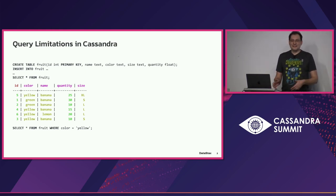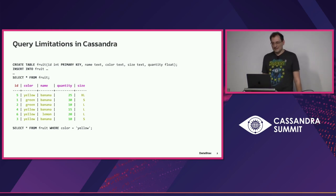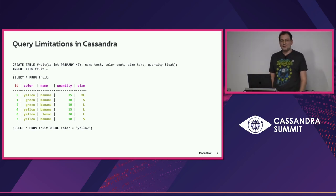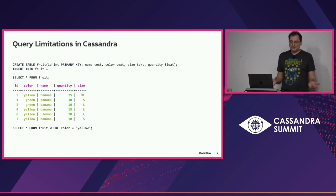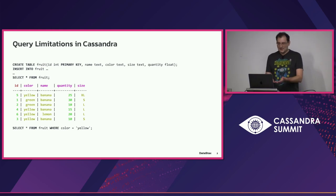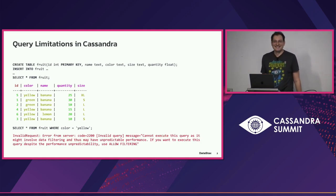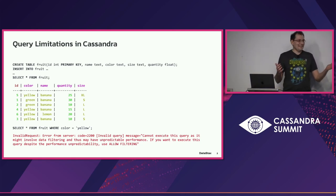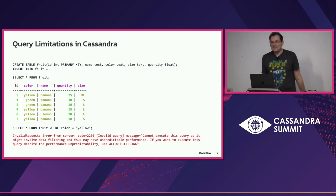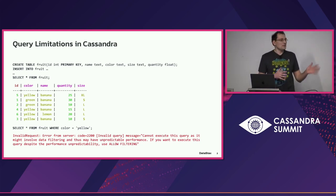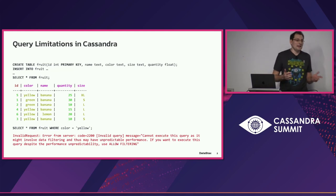Then we started doing some exercises and they quickly created something similar to a simple table with a few columns. Then they tried to do a SELECT with a column called 'color' that is not a primary key. It turns out when they tried this, they got an error — ALLOW FILTERING. It took me a while to explain what ALLOW FILTERING is. But this talk is mostly about how to avoid it.